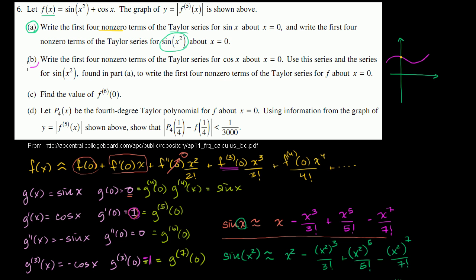We're on Part B. Write the first four non-zero terms of the Taylor Series for cosine of x about x equals 0. Use this series and the series for sine of x squared found in Part A to write the first four non-zero terms of the Taylor Series for f about x equals 0.